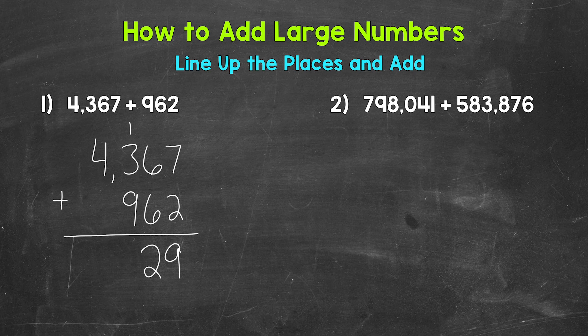Now we move left to the hundreds place, where we have one plus three plus nine. Technically this is 100 plus 300 plus 900, but we can think of it as one plus three plus nine. One plus three is four, plus nine is 13. So put the three in the hundreds place and carry the one over to the thousands place. Now we move left to the thousands place, where we have one plus four, which equals five.